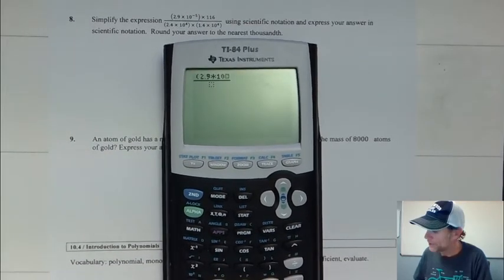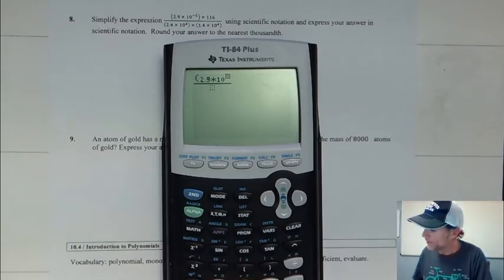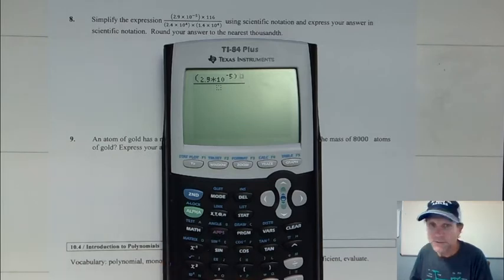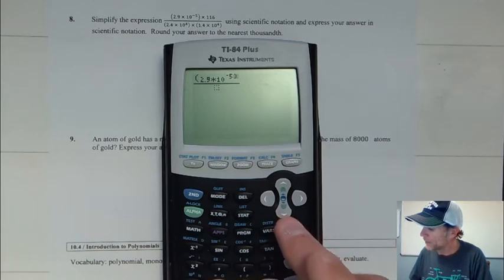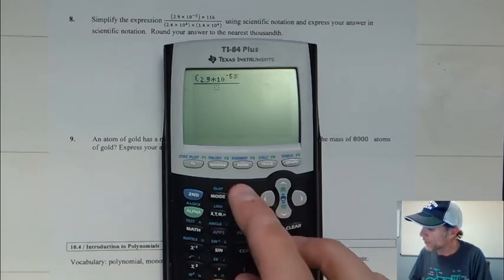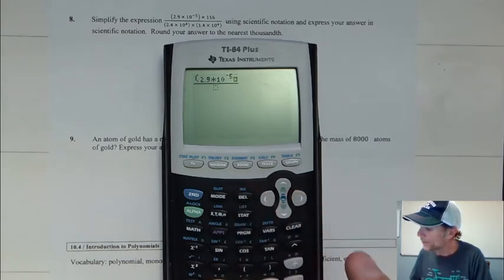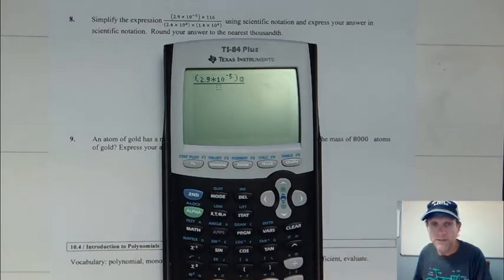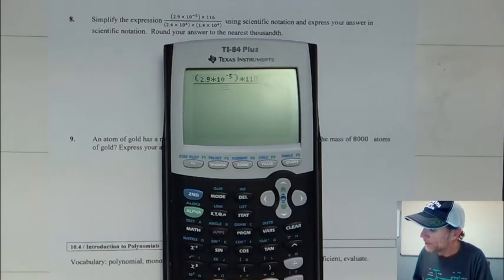So we have raised to the negative fifth. We're going to get the negative sign in there, and it's okay if it looks like that. I'll try to maybe get that to look a little lower there and put it right next to it like that.